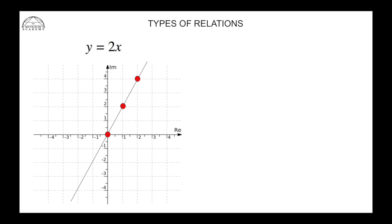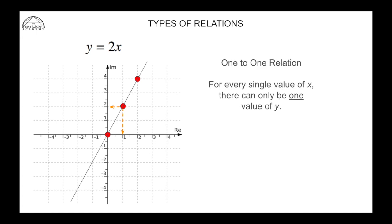We can see what a one-to-one relation looks like on a graph — it is a line. One x value maps onto one y value. So for a one-to-one relation, for every single value of x there can only be one value of y.